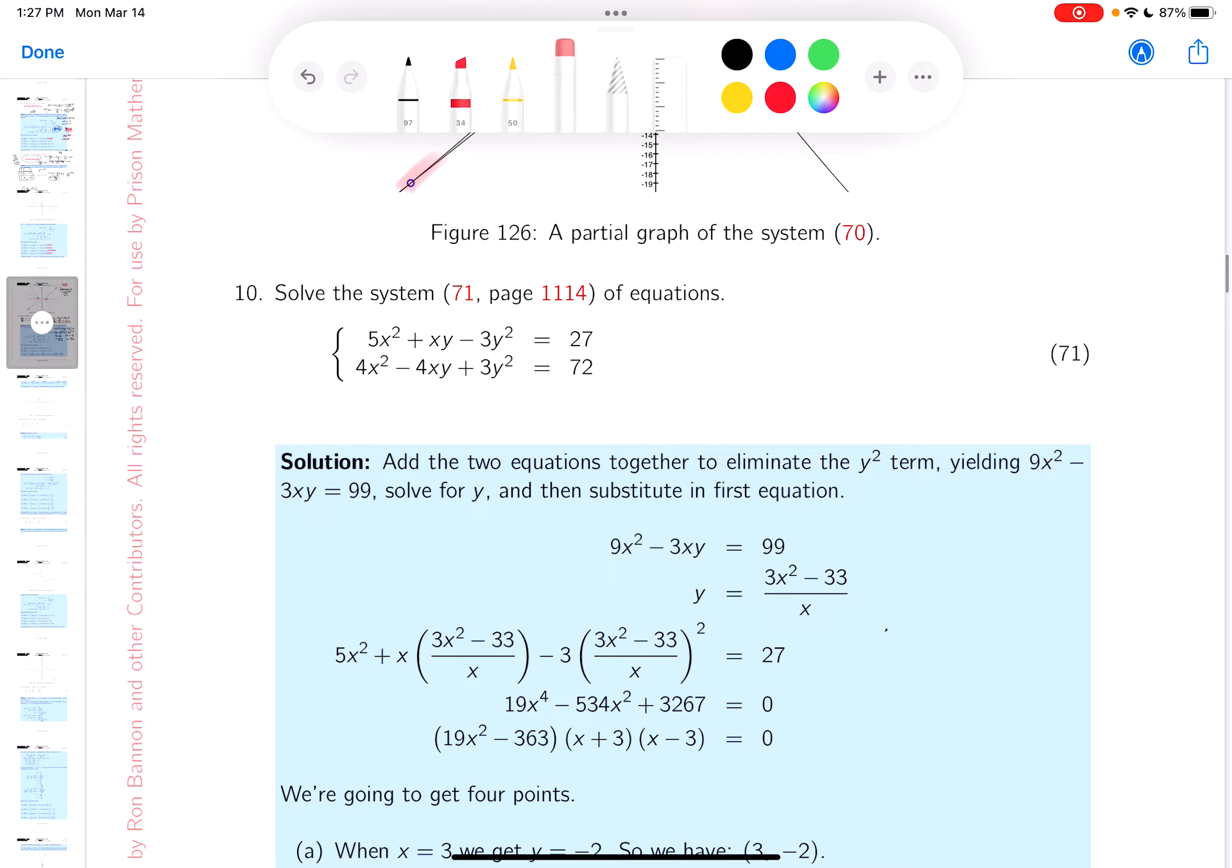I hope you can pay attention to what we were doing before. And if you like that method, you use it. Let's just talk through the key, though. In the key, what did I do? I said add the two equations together to eliminate the y² term. Well, if you do that, let's just follow what they said. If you add these two equations together, what would you get? 9x².